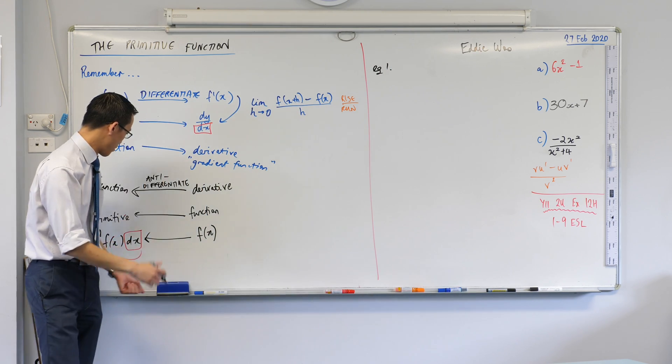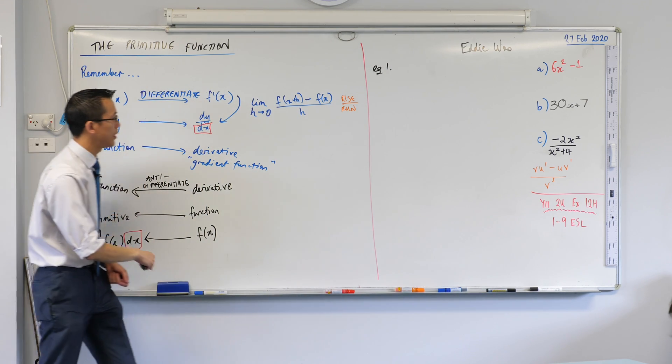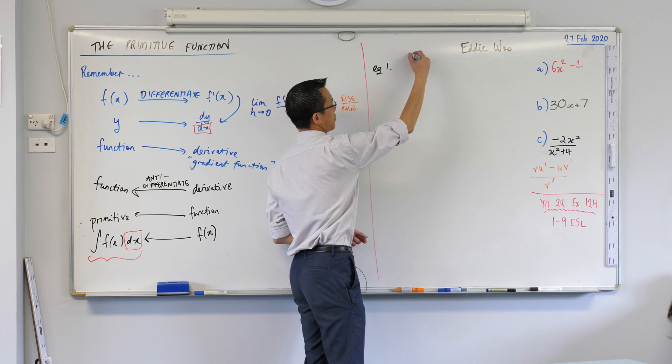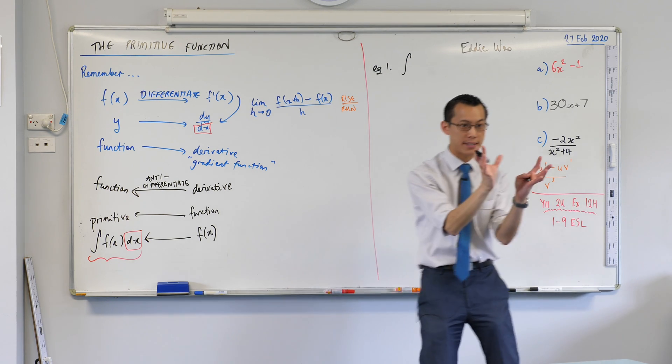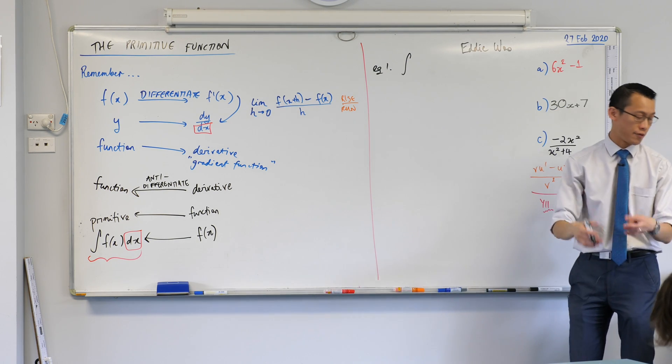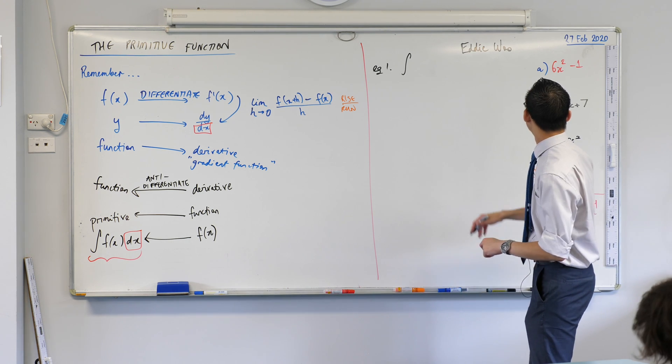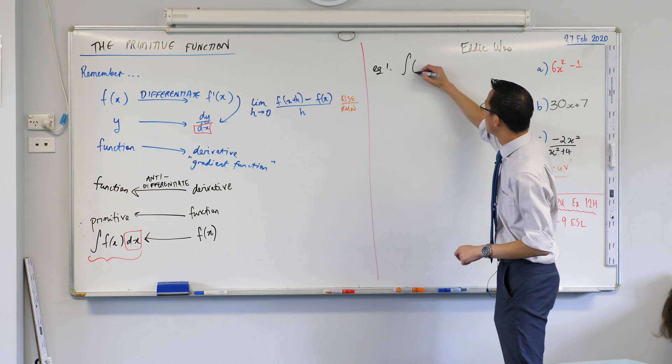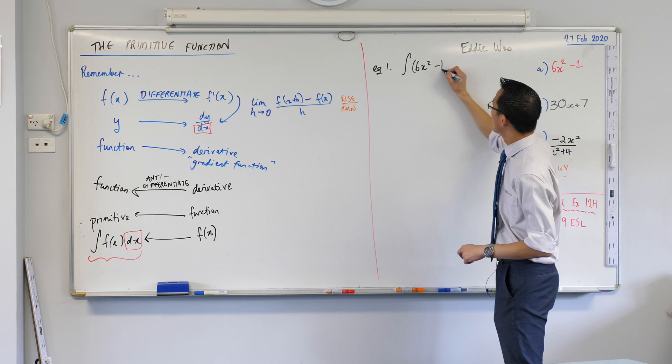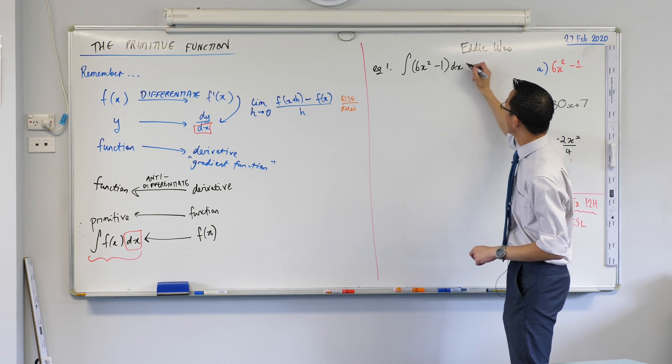Example 1. I'm going to use this notation over here. You've got this elongated s, which means the thing you're about to see, I want you to anti-differentiate it. And the function I'm going to give you is this.